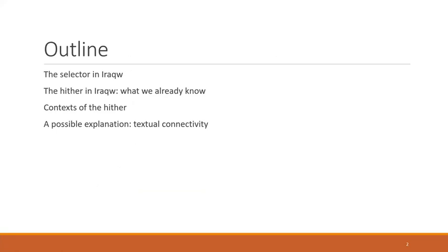I will first say a few words about the selector in Iraqw, then talk a little bit about the hither and what we already know about it. Then I'll go into looking at the rest category in two parts. I did a context analysis first, so I'll go through some of the results on that with you. Then I will give a possible explanation for the use of the hither in this rest category — and you already get a sneak peek here, but more on that later.